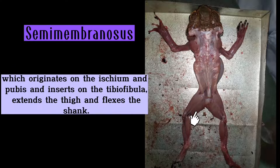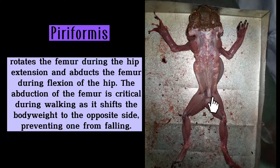The semimembranosus, which originates on the ischium and pubis and inserts on the tibiofibula, extends the thigh and flexes the shank.